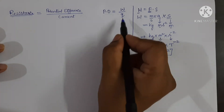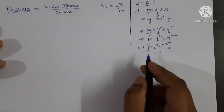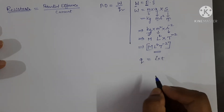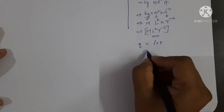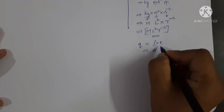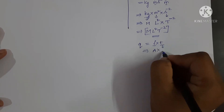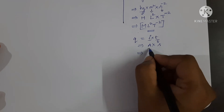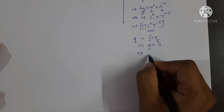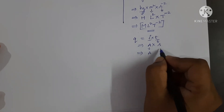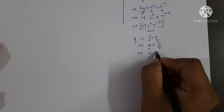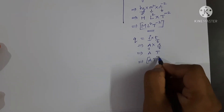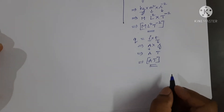Now we have to find the dimensions for charge. Charge equals current into time. The SI unit for current is ampere and for time is second. In dimensions, ampere is expressed as capital A and second as capital T, so the dimensional formula for charge is A T.